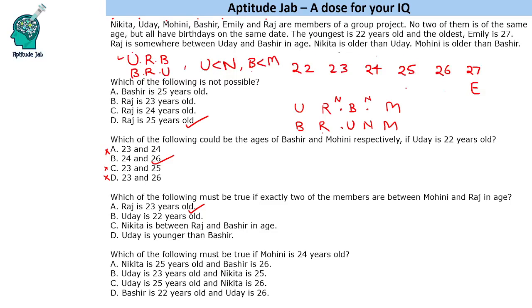If Mohini were younger than Raj, Mohini cannot be the youngest since she is older than Bashir, so placing her below Raj with two people between them doesn't work. Therefore Mohini will be older than Raj, and the only valid placement is Raj at 23 and Mohini at 26. The other three people can be in any order. Udaya being 22 is not necessarily true, nor is Nikita being between Raj and Bashir. But Raj being 23 years old is necessarily true in all scenarios.